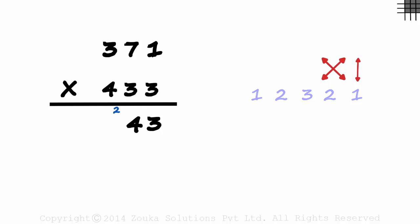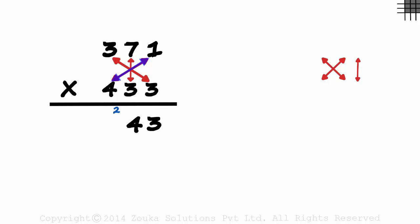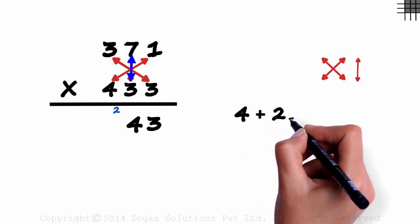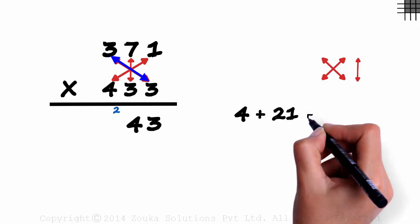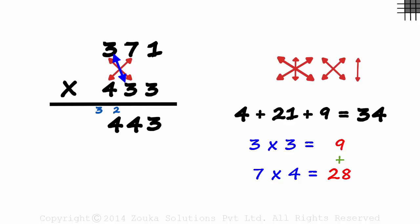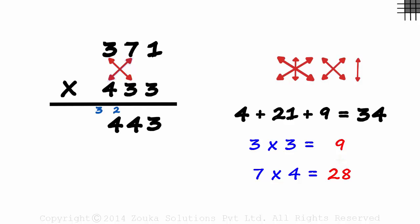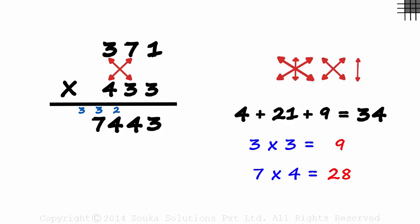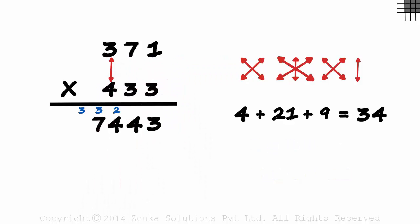So we find the sum of these 3 products. 1 multiplied by 4 is 4. 7 times 3 is 21 and 3 times 3 is 9. Their sum is 34. 4 and a 3 carried over. And then the sum of these two products. 9 plus 28 is 37. We write a 7 and a 3 on top.